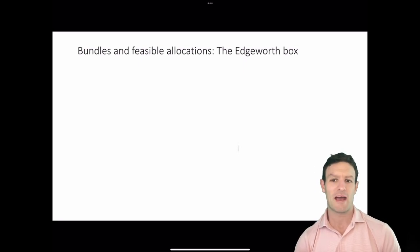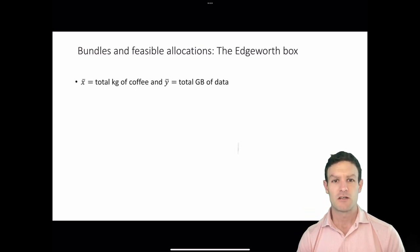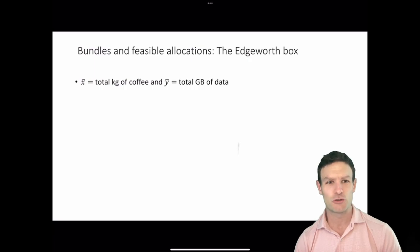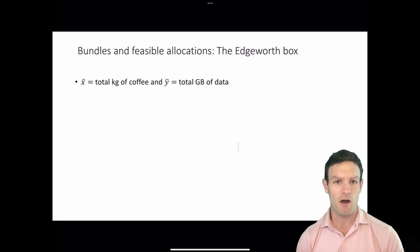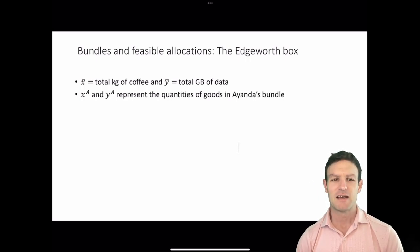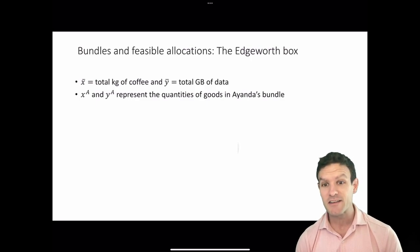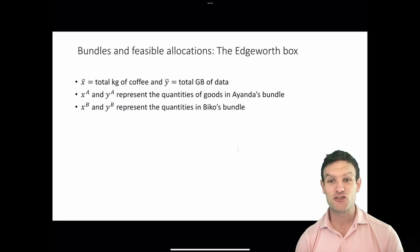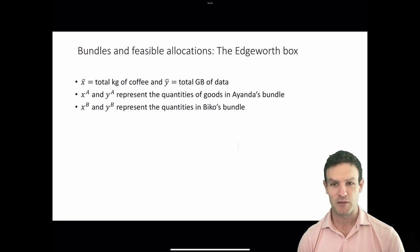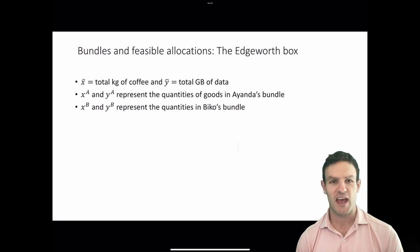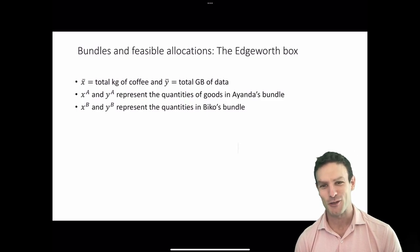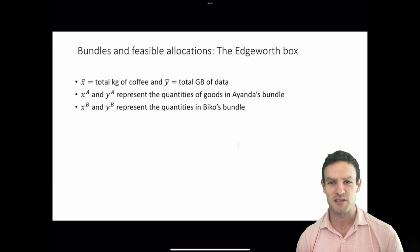In our story we have two people: Ayanda and Bicor. They like two goods: kilograms of coffee and gigabytes of data. X bar and y bar are the total amounts of those two goods respectively. X superscript a and y superscript a represent the quantities of goods in Ayanda's bundle. Similarly, x superscript b and y superscript b represent the quantities in Bicor's bundle — I'll refer to those as xa, ya, xb, and yb.